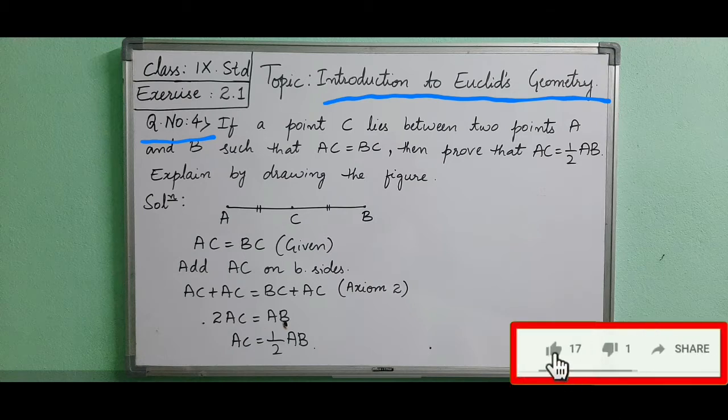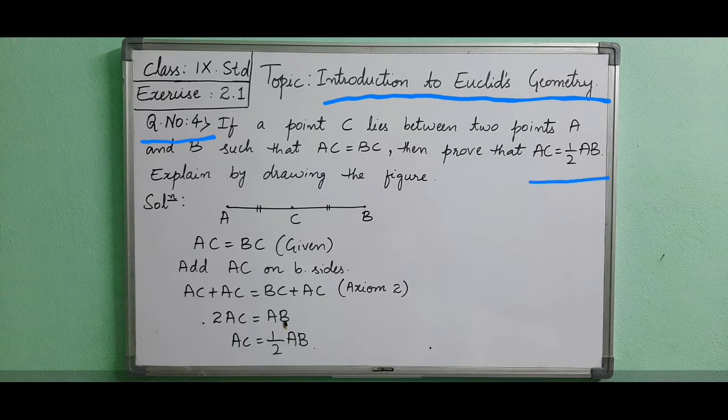If a point C lies between two points A and B such that AC is equal to BC, then prove that AC is equal to half of AB. Explain by drawing the figure. So, look at the figure here.